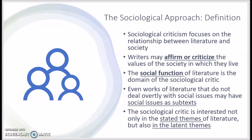The sociological approach focuses on the relationship between literature and the society in which it was written. Writers can affirm — which means to agree — reinforce, or perpetuate. Or they can criticize — which means to go against or disagree with — the values of the society in which they live. It is important to note that even if the work does not make an obvious argument for or against the values of the society in which it was written, social issues are still likely addressed in the characters, the conflicts, the settings, etc.